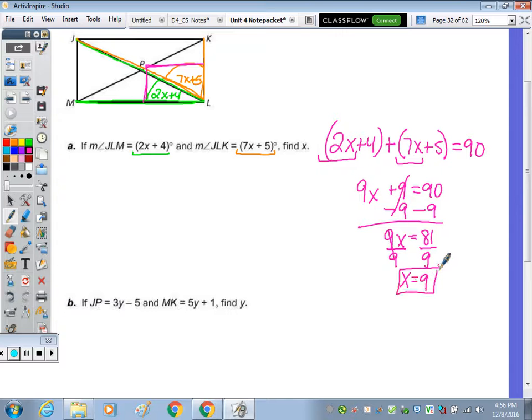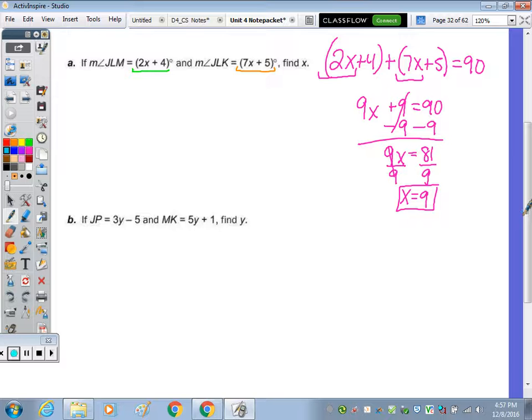X equals 9. Next we're looking at JP and MK. In the picture, JP is right here, and MK is the whole diagonal. If I had two JPs, that would give me one whole diagonal, and the diagonals are congruent. So we know that 2 times JP equals MK.